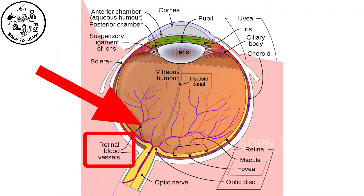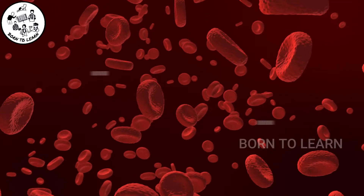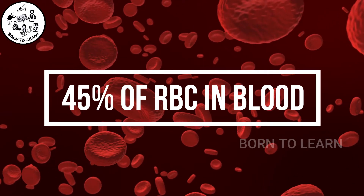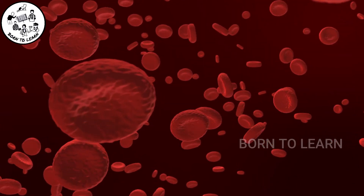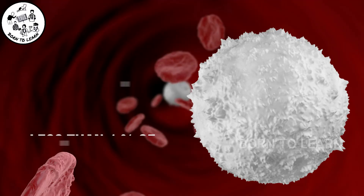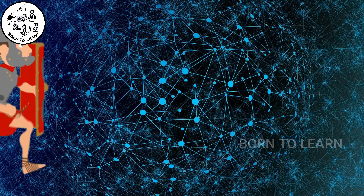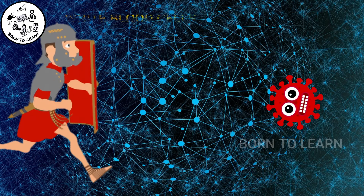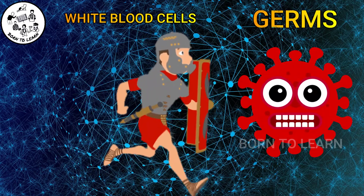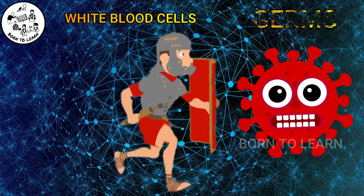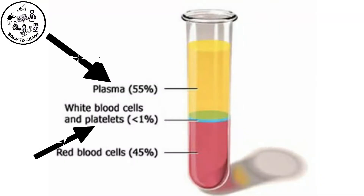The retina has capillaries. There are 45% red blood cells. Red blood cells carry oxygen to our body parts. 1% are white blood cells. We can see something in our body. The blood cells are in the blood.